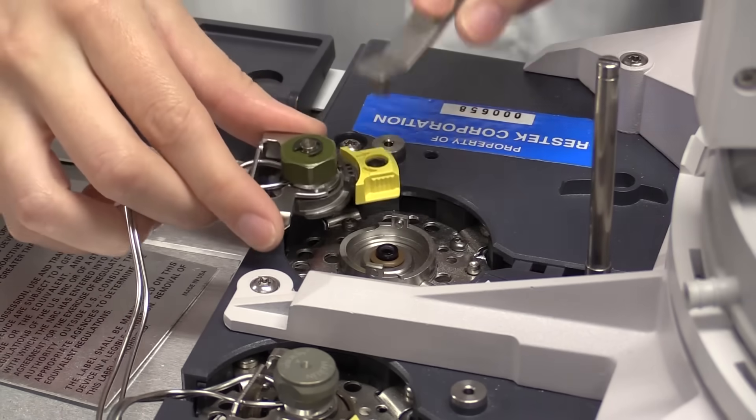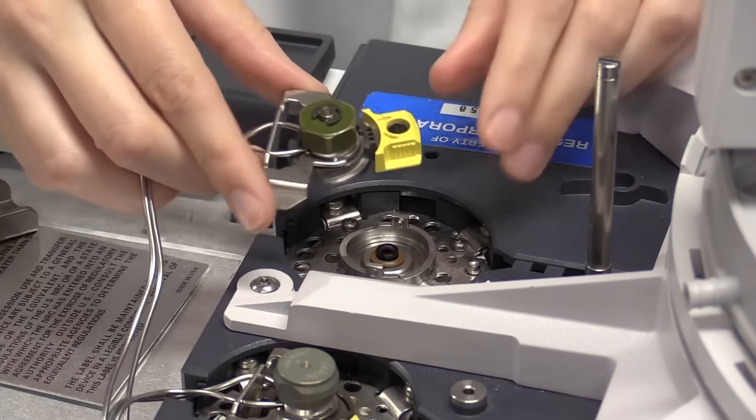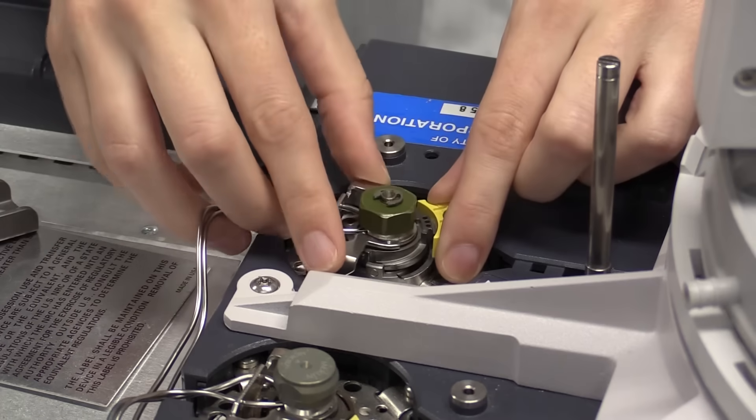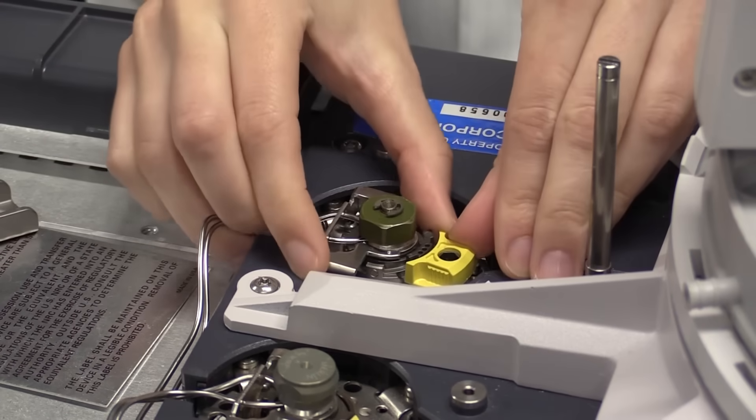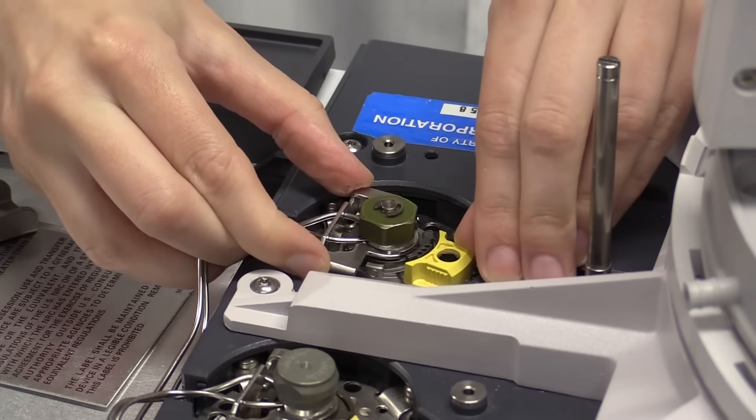Incorrectly tightening the septum nut or injection port weldment after changing the septum and liner can lead to leaks. To fix a leak here, try loosening and correctly re-tightening the nut or weldment.